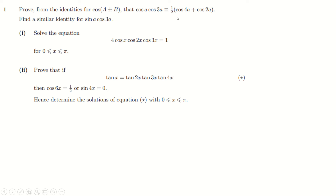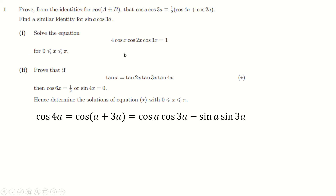I'm going to start with this side and think about cos(4a) first. That can be written as cos(3a + a) in brackets. Which according to this identity gives us cos(3a)cos(a) minus sin(3a)sin(a), because cos is the one that goes cos·cos minus sin·sin.